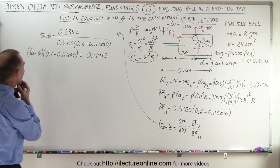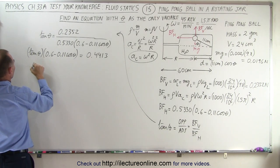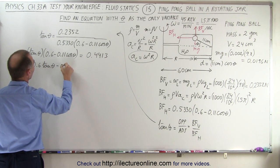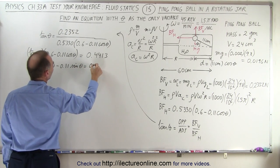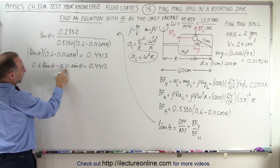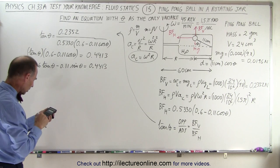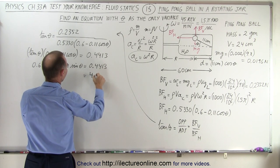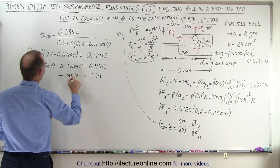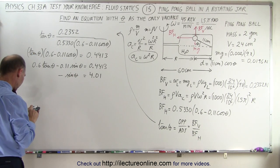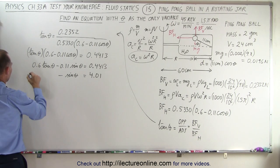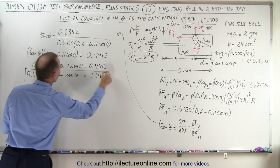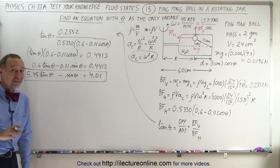Multiplying through, we get 0.6 times tangent(theta), and since tangent times cosine equals sine, we have minus 0.11 times sine(theta) equals 0.4413. Dividing everything by 0.11: 0.6 divided by 0.11 is 5.45, giving us 5.45 times tangent(theta) minus sine(theta) equals 4.01. This is the simplified equation where the only variable left is theta.